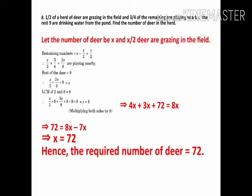I will tell the line again. Half of the deer are grazing in the field, that is x by 2. The remaining is x by 2. Three-fourths of them are playing, that is 3x by 8. And remaining 9 are drinking water. So x by 2 plus 3x by 8 plus 9 equal to x. Multiply throughout the equation by 8, and you will get the answer x equal to 72.